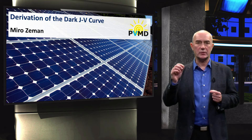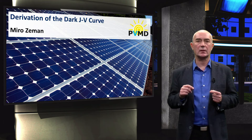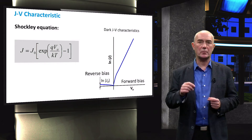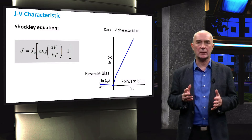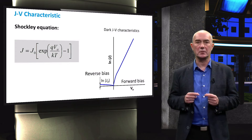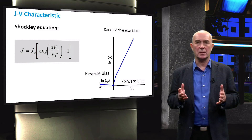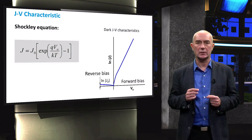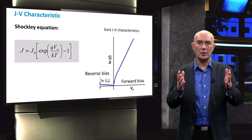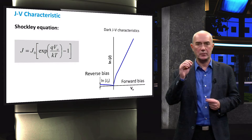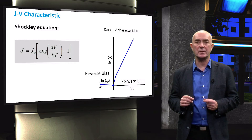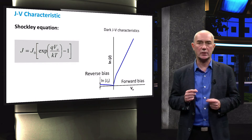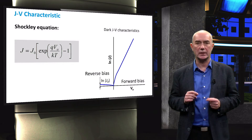In the previous video we saw the plot of the JV characteristic for a P-N junction diode and the Shockley equation that describes the JV characteristic of the ideal diode. In this video we will discuss how to derive the Shockley equation. This video is for those who want a deeper understanding of the physics behind the current density-voltage relationship for a P-N junction in the dark.